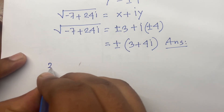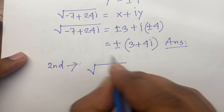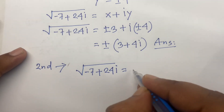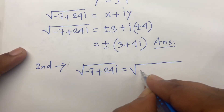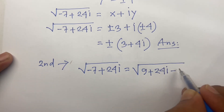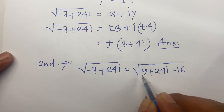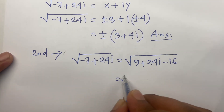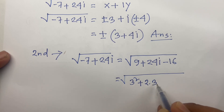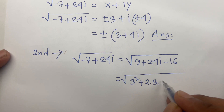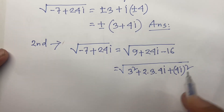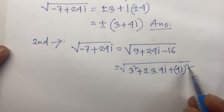Now the second method. Rewrite minus 7 plus 24i as 9 plus 24i minus 16. Note that minus 16 plus 9 equals minus 7. Then 9 is 3², and 24i equals 2·3·4i, and minus 16 equals (4i)² since i² equals minus 1.